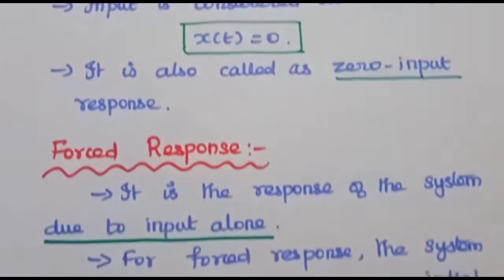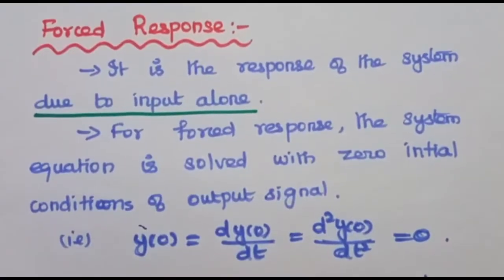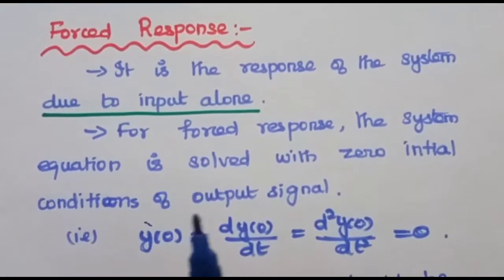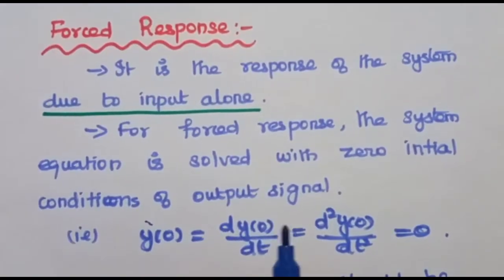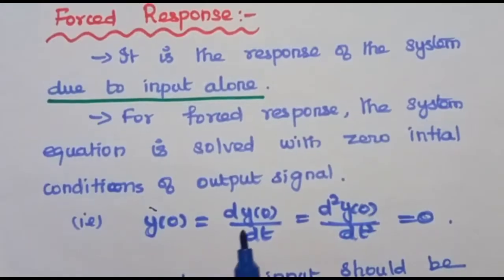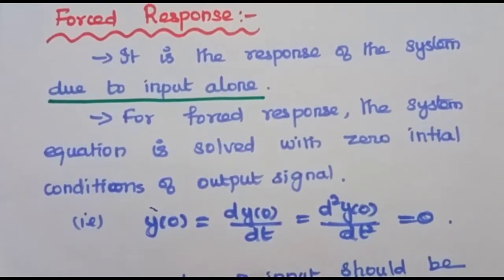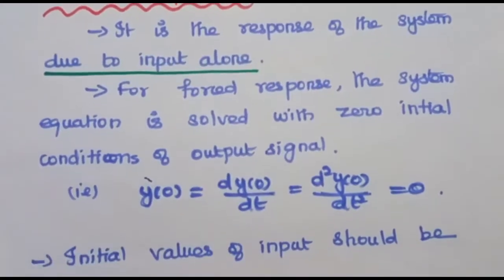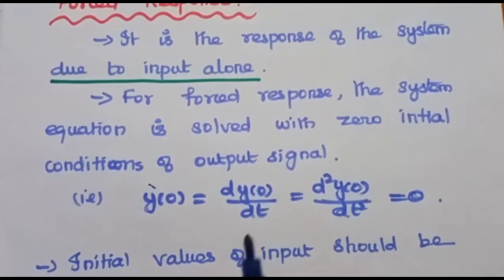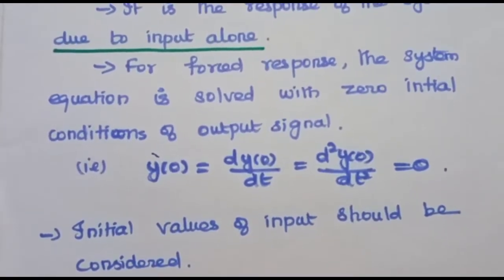The next one is forced response. It is the response of the system due to input alone. Here, the initial values of the output signal are considered as 0, that is y of 0, dy of 0 by dt, d squared y of 0 by dt squared — all are equal to 0. Forced response is due to the input signal alone along with its initial values.